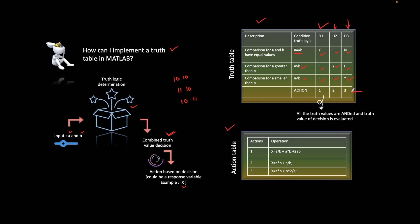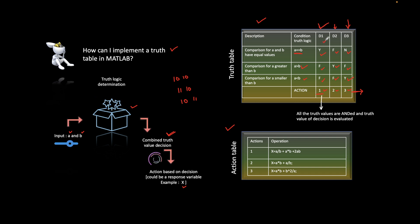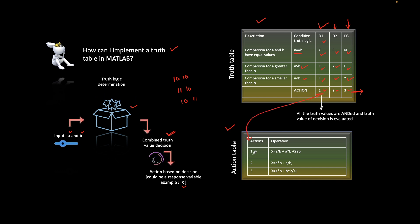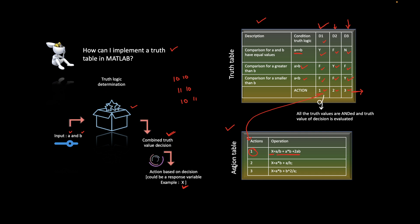Taking decisions alone is not enough — you need to take some actions. There will be action numbers defined against every decision. For decision one, the corresponding action number one is executed, which generates x as the output. Using inputs a and b, some calculation is done and the result is sent out as x.